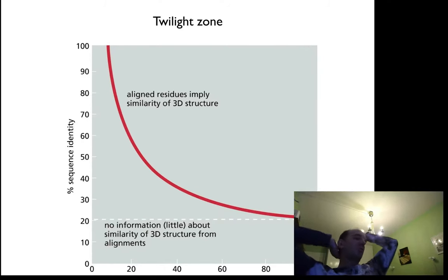So people for a long time use something called the twilight zone to try to define what sequence identity you have and how well you model it. So basically, often people say 20% sequence identity is a good cutoff. If you have that, you have very little information. But given the rapid progress of alignment methods, there are many, many cases you make very nice models way below 30% sequence identity.